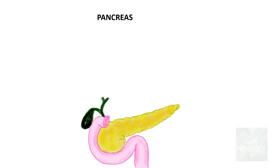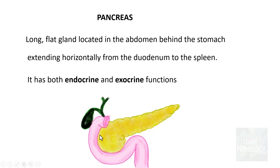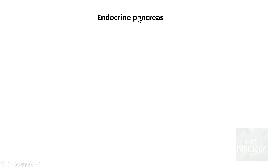Before we understand the concepts of diabetes mellitus, let us learn about the pancreas. The pancreas is a long flat gland located in the abdomen behind the stomach. It extends horizontally from the duodenum to the spleen, and we know that the pancreas has both endocrine and exocrine functions. In the context of diabetes mellitus, we should focus on its endocrine functions.